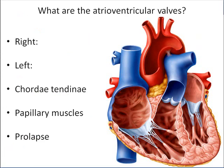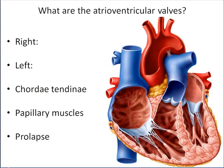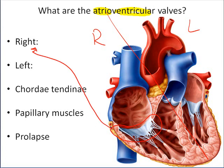Now let's look at what separates each atrium from each ventricle. On the right side of the heart there is a flap of connective tissue called the atrioventricular valve, which separates the atrium from the ventricle. On the right side we call this the tricuspid valve because it has three cusps or three flaps. It's also called the right atrioventricular valve or right AV valve for short. You need to know both names because different medical professionals may use either one.